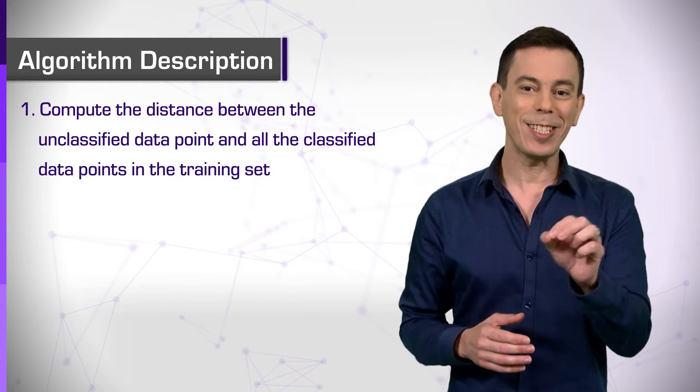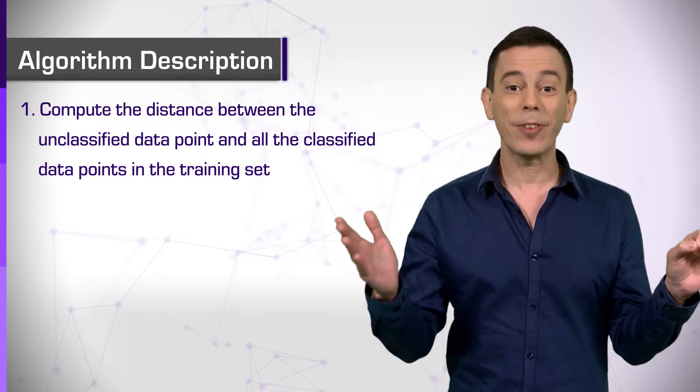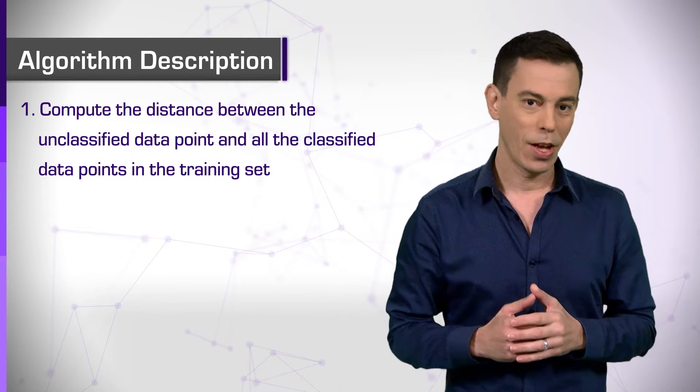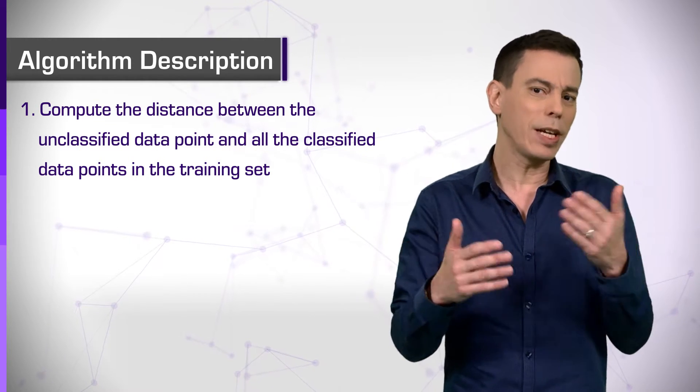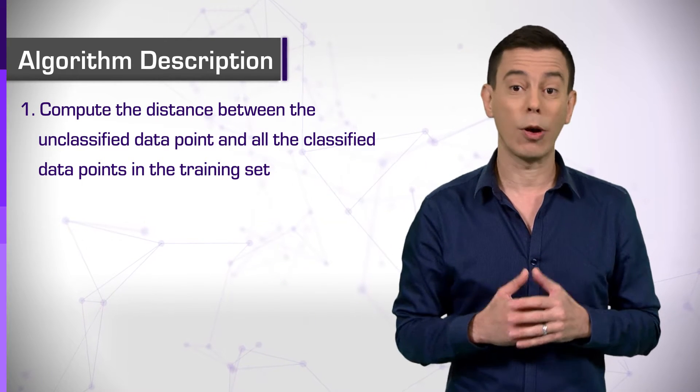Step 1. Compute the distance between the unclassified data point and all the classified data points in the training set. For that, we will need distance metrics, which can be calculated in many different ways, as we saw in the previous unit about k-means.